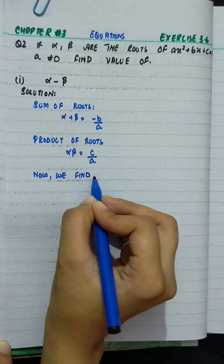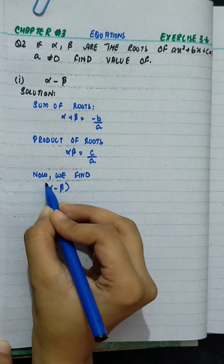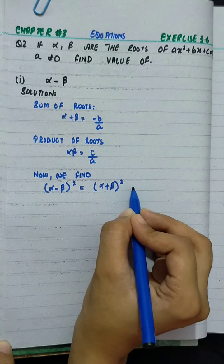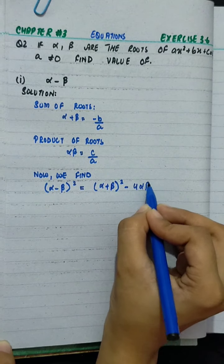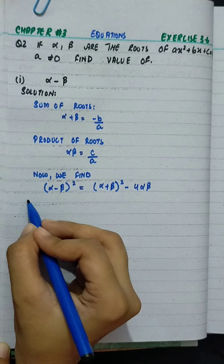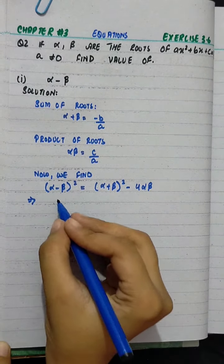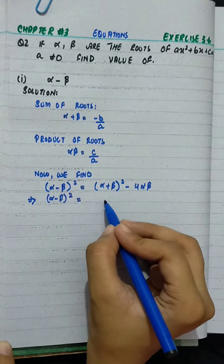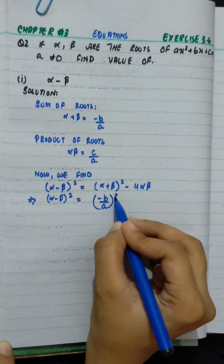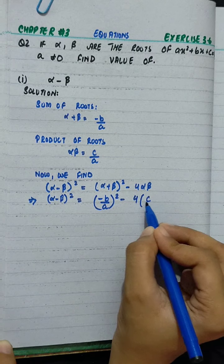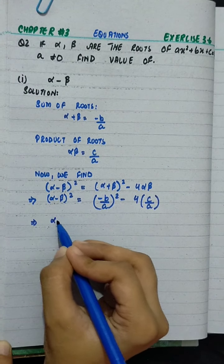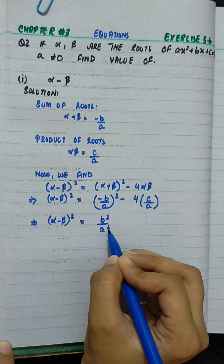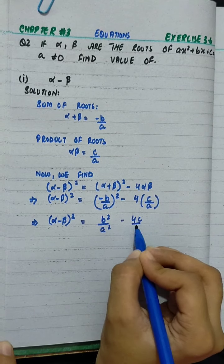Now we find: alpha minus beta whole square equals alpha plus beta whole square minus 4 times alpha times beta. So alpha minus beta whole squared equals minus b over a, squared, minus 4 times c over a. That gives us b squared over a squared minus 4c over a.